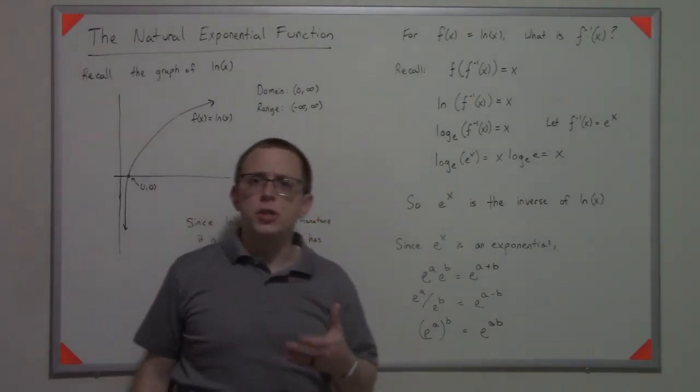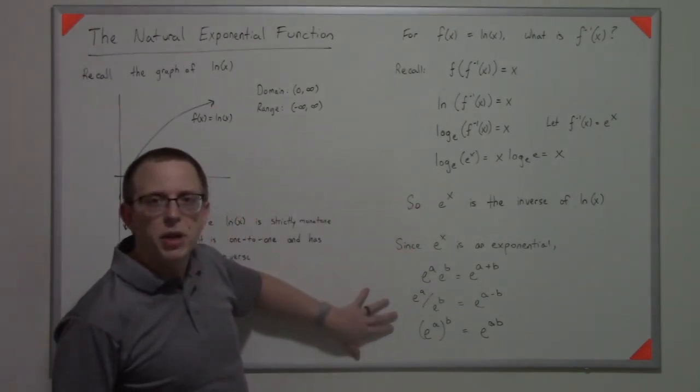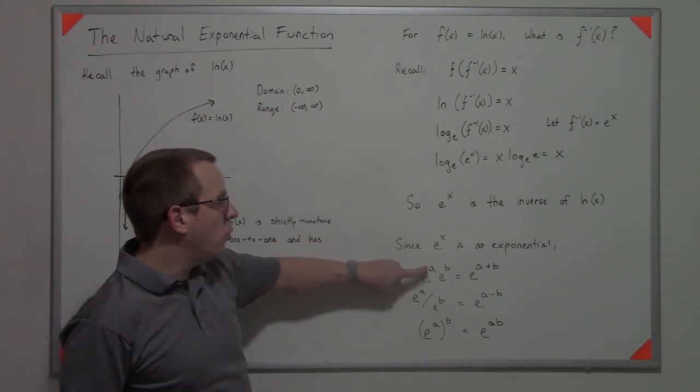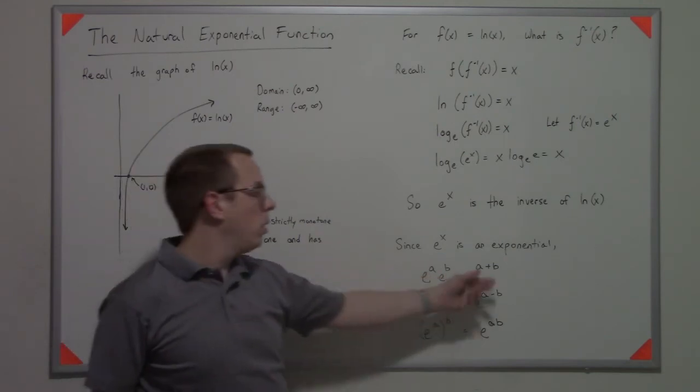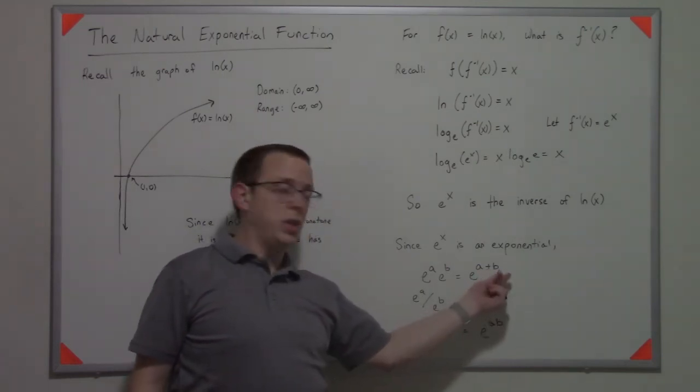And just as a simple reminder, since e to the x is an exponential, you have these exponential properties. So e to one power times e to another power is e to those powers added together. And often you actually use it the other way. You split it out like this. You start with something like this and you split it out.